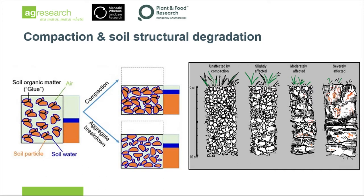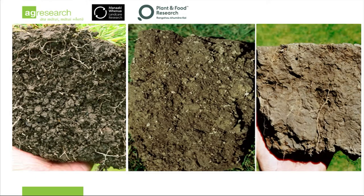Moving on to what compaction or degradation looks like. If you've got an ideal soil, it's got a mixture of particles, air and water, nicely arranged in aggregates. If you disrupt that and squash all the air out, you get a much more dense situation. On the other hand, if you've damaged your soil through over-cultivation, you can go towards aggregate breakdown and sediment runoff. Diagrammatically, it ranges from a nice well-structured soil through to something quite horrendous with mottling and poor drainage. In real life, here's your nice well-structured soil that would break up into crumbs in your hand, versus something that breaks into hard cricket-ball-like clods — something in between.